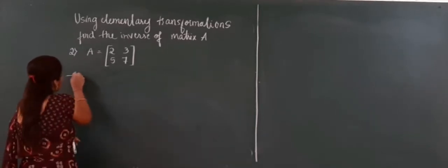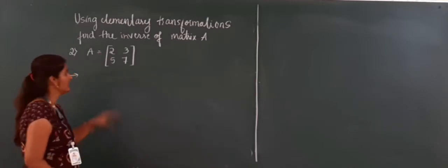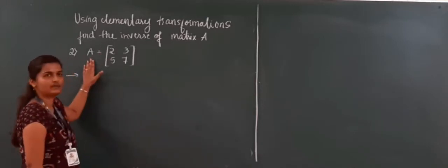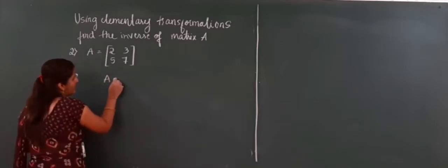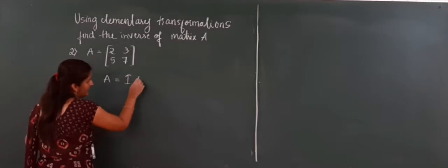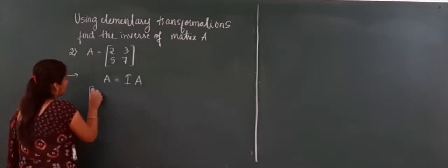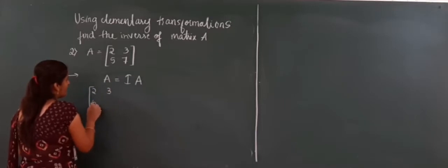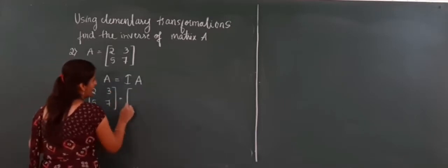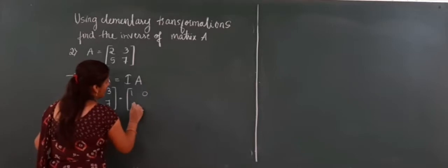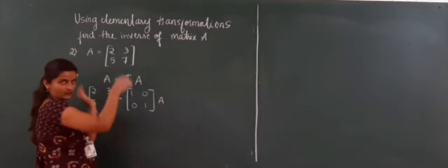Using elementary transformations, find the inverse of matrix A. Here they have given matrix A. The first step is to write A equals I times A. So I will write the A matrix: 2, 3, 5, 7. Then I have to write the 2×2 identity matrix and A as it is. Please don't write A in matrix form.